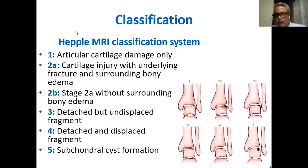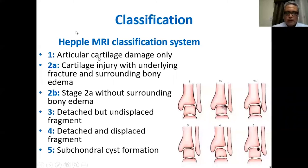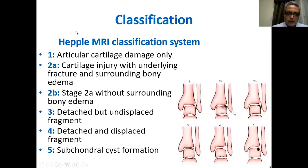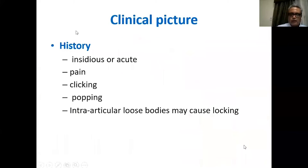Another classification based on MRI, proposed by Hepple et al., divides lesions into five stages. Stage 1 is articular cartilage damage only. Stage 2a is cartilage injury with underlying fracture and surrounding bony edema. Stage 2b is the same without surrounding bony edema. Stage 3 is a detached but undisplaced osteochondral fragment. Stage 4 is a detached and displaced fragment. Stage 5 is subchondral cyst formation not communicating with the articular surface.